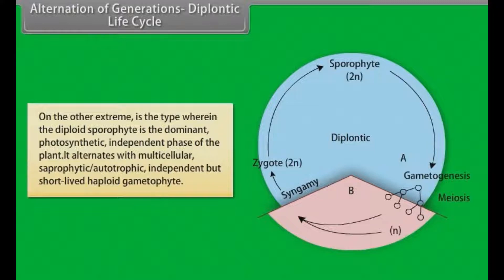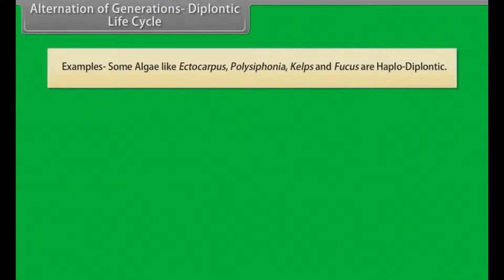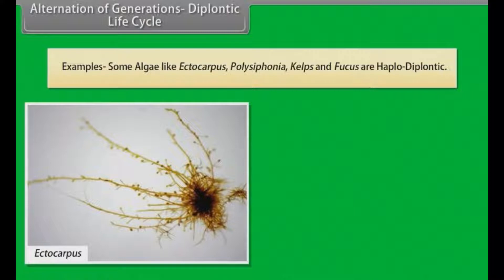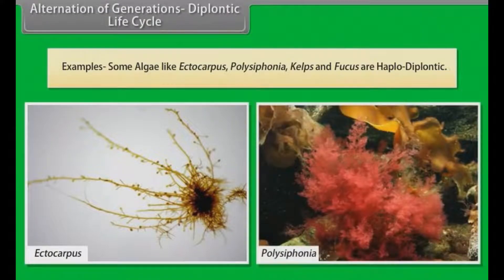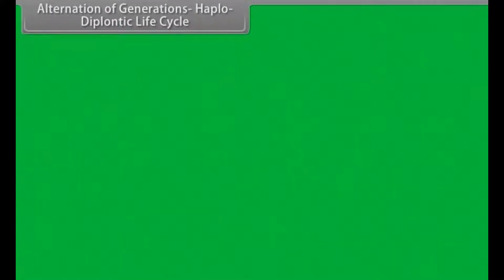In the haplontic life cycle, the sporophytic generation is represented only by the one-celled zygote. There are no free-living sporophytes; meiosis in the zygote results in haploid spores. The dominant photosynthetic phase is the free-living gametophyte. Examples include some algae like Ectocarpus, Polysiphonia, kelps, and Fucus — these are haplodiplontic.